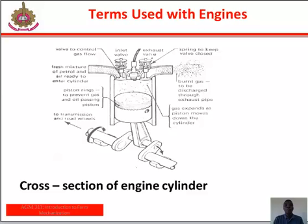The piston cannot go beyond the top dead center. We also have the bottom dead center (BDC), which is the position of the crank and piston when the piston is nearest to the crankshaft. The piston cannot move down beyond the bottom dead center while going downwards.